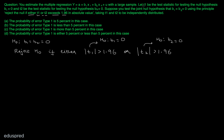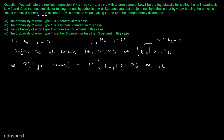This information is given in the problem: t1 is the test statistic for testing b1 equal to 0, and t2 is the test statistic for testing b2 equal to 0. As you can see in the options, we have to talk about the probability of Type 1 error. In this case, the probability of Type 1 error will be equal to the probability that |t1| > 1.96 or |t2| > 1.96.